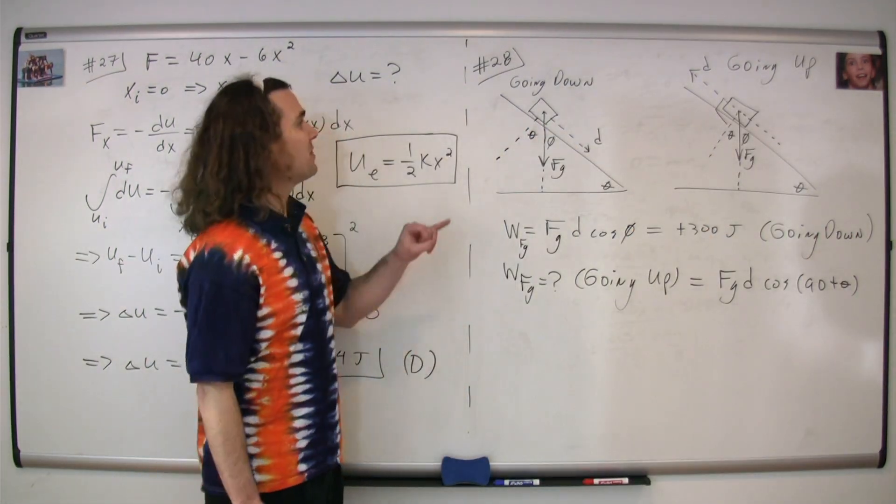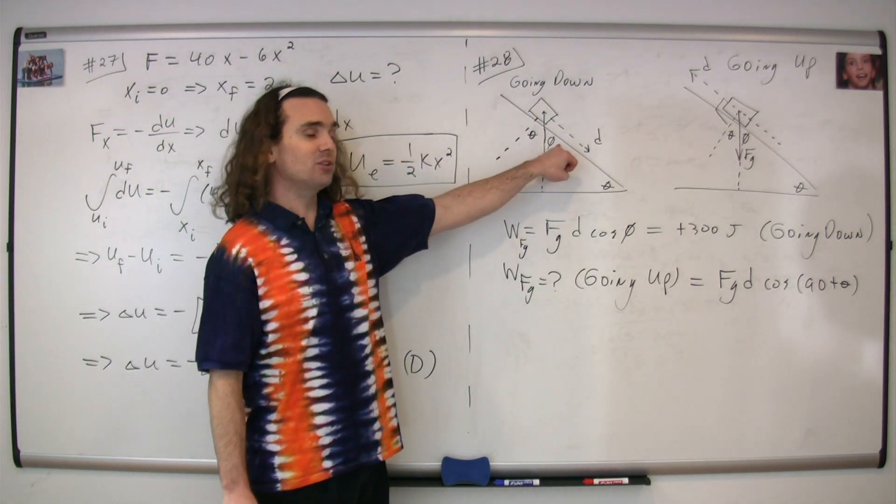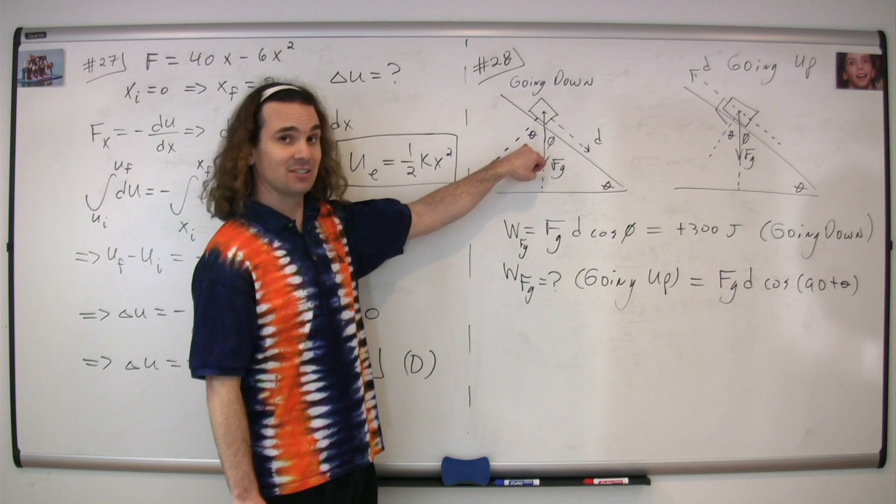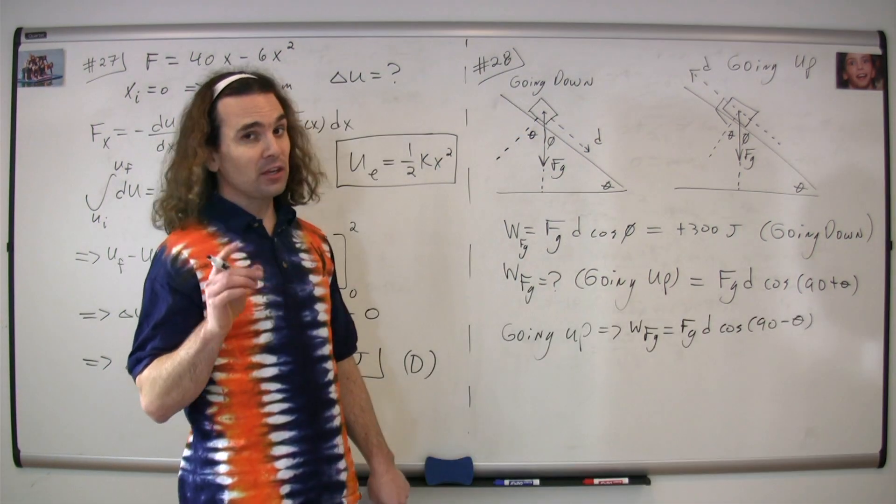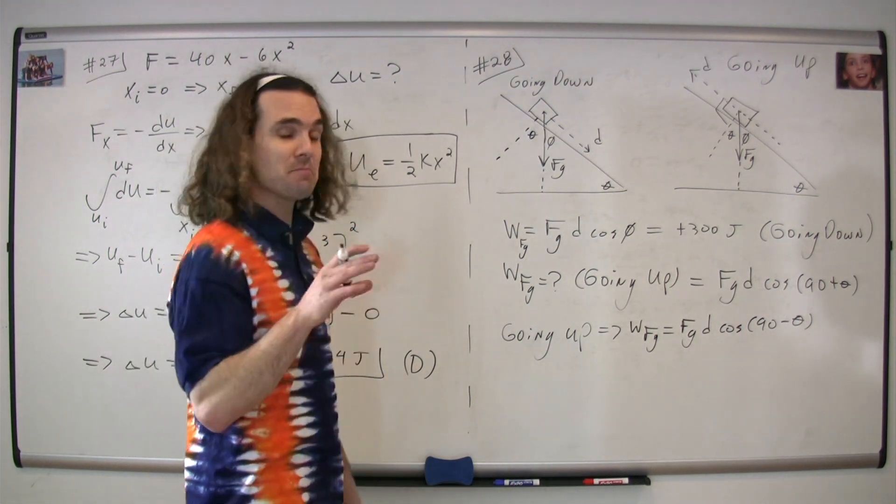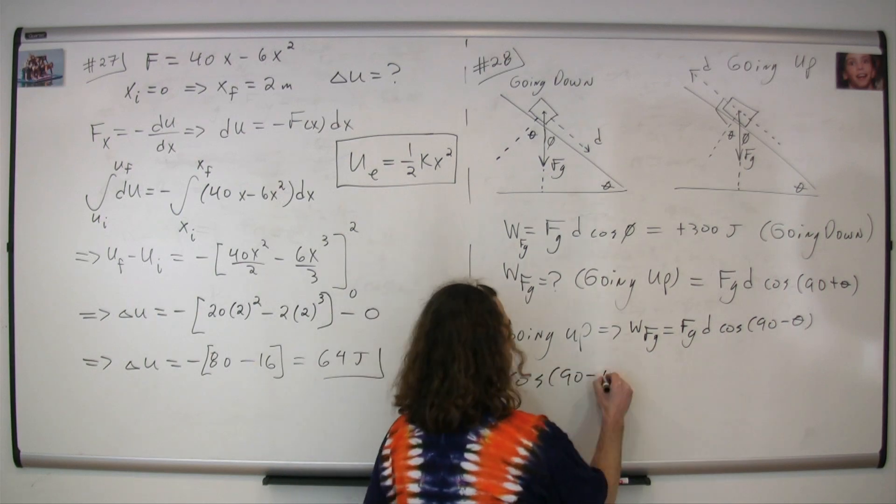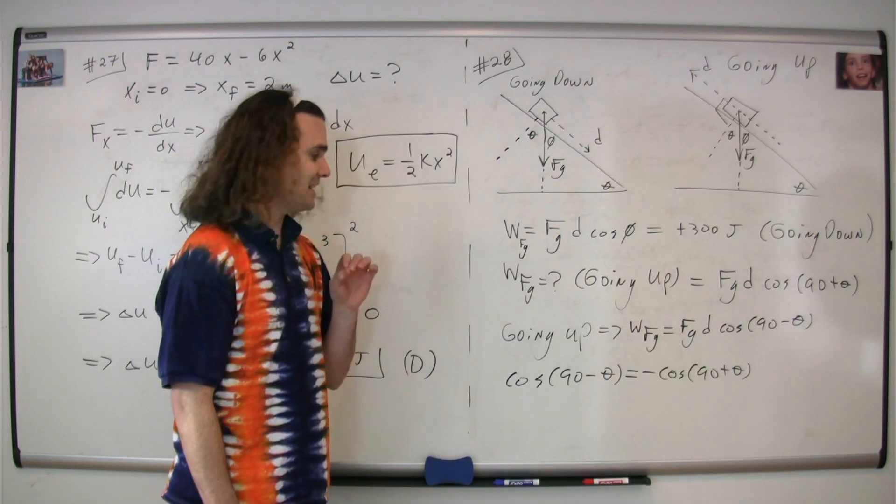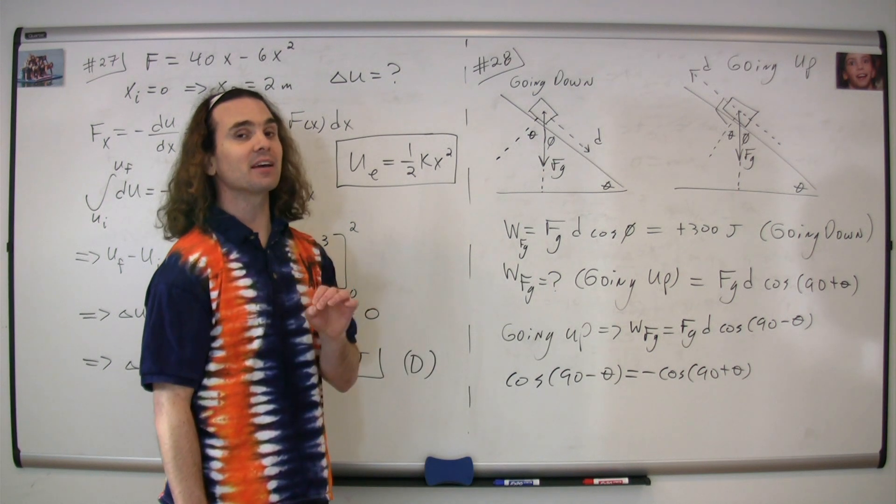Notice that when the block is going down the incline, phi is actually equal to 90 minus theta. One thing you should be able to see is the relationship between the cosine of 90 minus theta and the cosine of 90 plus theta. The cosine of 90 minus theta is equal to the negative of the cosine of 90 plus theta.